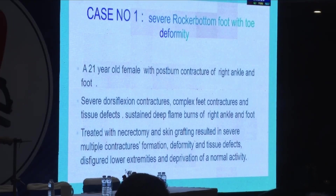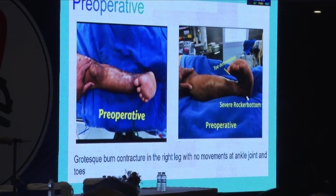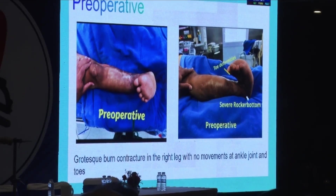Coming to case number one: this patient, a 21-year-old female, presented with a post-burn contracture of the right ankle and foot. She sustained this injury when she was a five-year-old girl — boiling milk fell on her feet and ankle, and she underwent escharotomy and skin grafting, but all failed. She presented with such a progressive deformity.